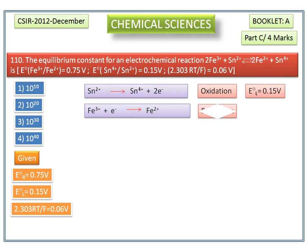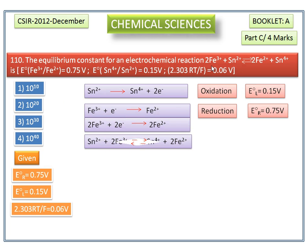Its E°R or E° cathode is equal to 0.75 volt. Balancing these two equations, we multiply this equation by two, then we add these two equations to get the overall electrochemical reaction.